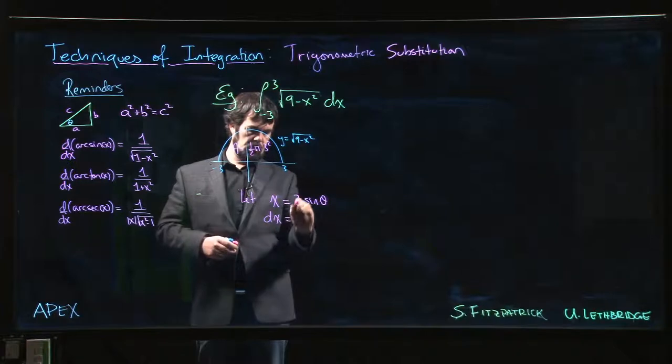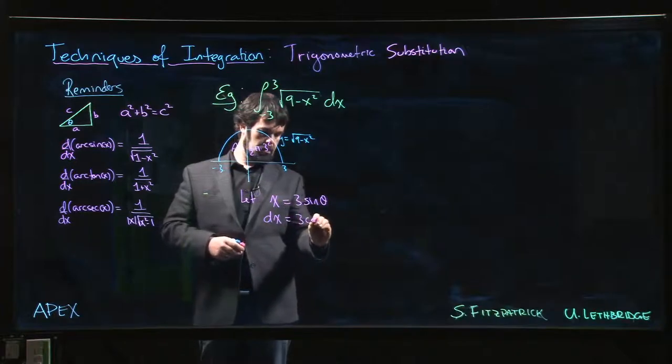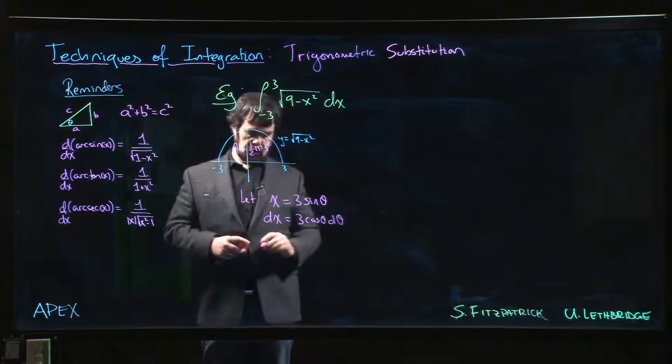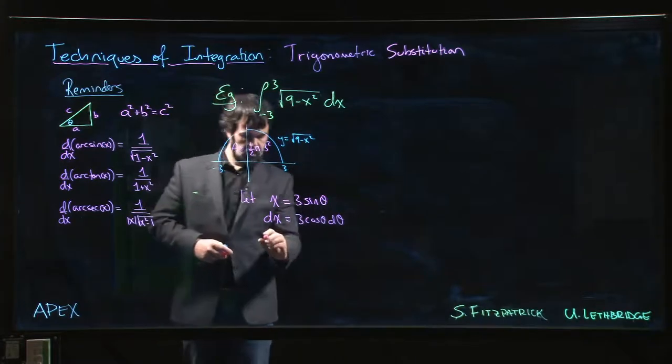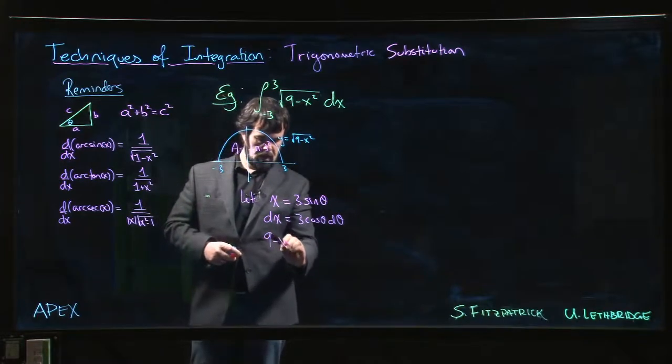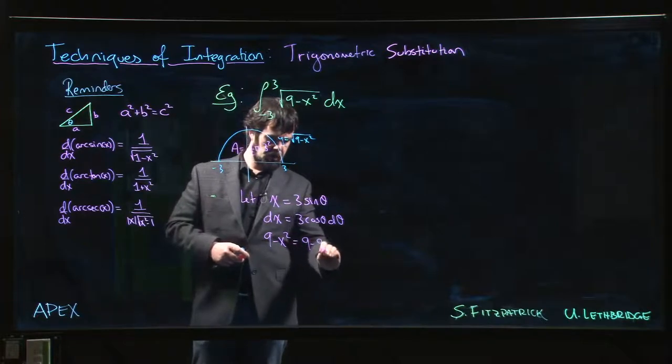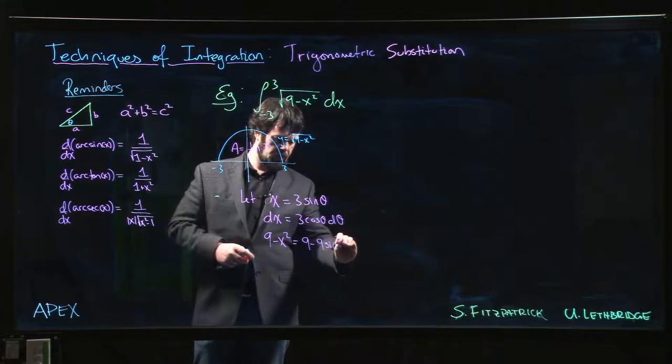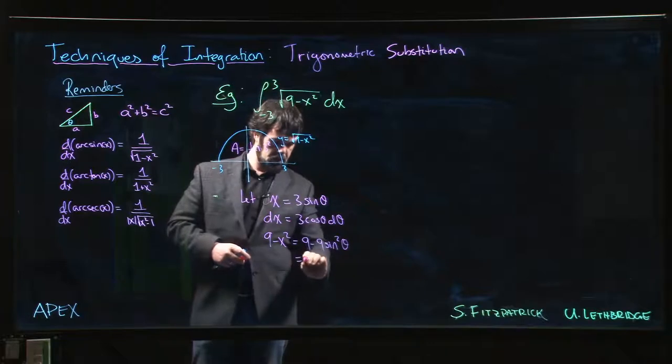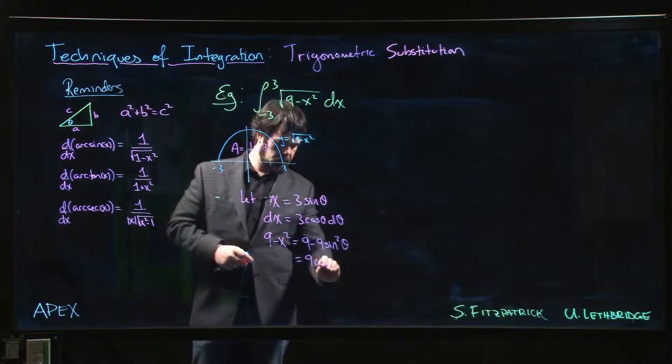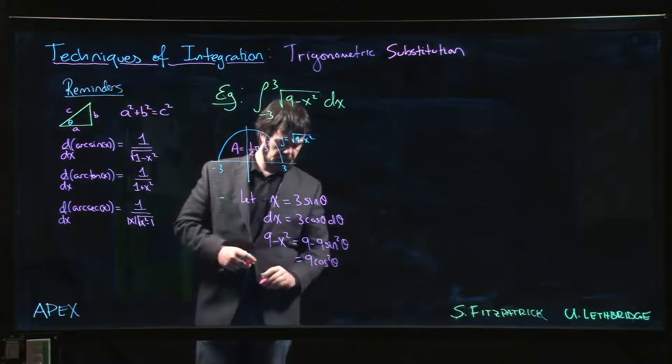dx then will be 3 cos theta d theta and 9 minus x squared becomes 9 minus 9 sine squared theta, which is 9 cos squared theta.